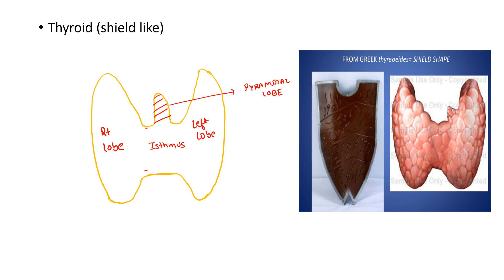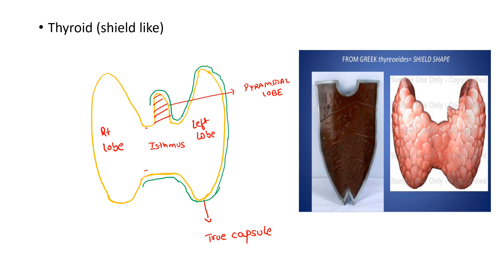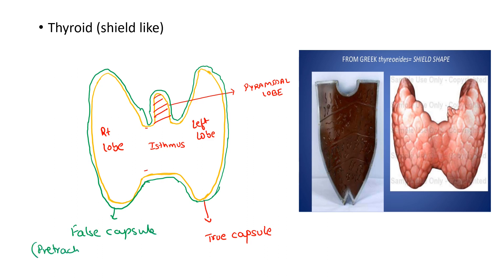The thyroid gland is surrounded by a capsule known as the true capsule. There are two capsules in the thyroid gland: one is the true capsule and another is the false capsule. The true capsule is actually a condensation of connective tissue of the thyroid gland. The false capsule is derived from the pretracheal layer of deep cervical fascia — this is one important MCQ in your exam.